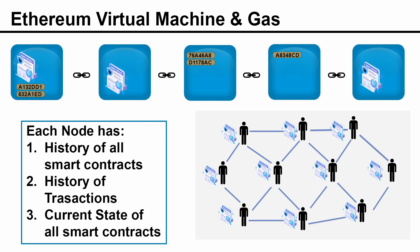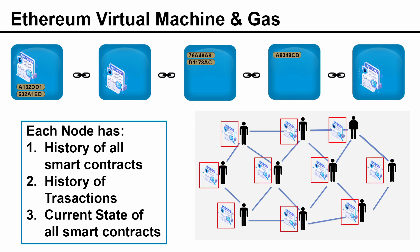Let's start with the first problem — viruses and access to private files. When you participate in a network, you actually get an Ethereum Virtual Machine, or EVM. The EVM is a virtual machine running on your computer, and therefore it completely encapsulates everything in it. These smart contracts are running on your computer, but inside the virtual machine — it's like having a computer inside a computer. Nothing can get out of that virtual machine, so anything that happens inside the EVM has no effect on your computer, and in fact they don't know about anything outside that EVM. Everything that happens in the EVM stays in the EVM.